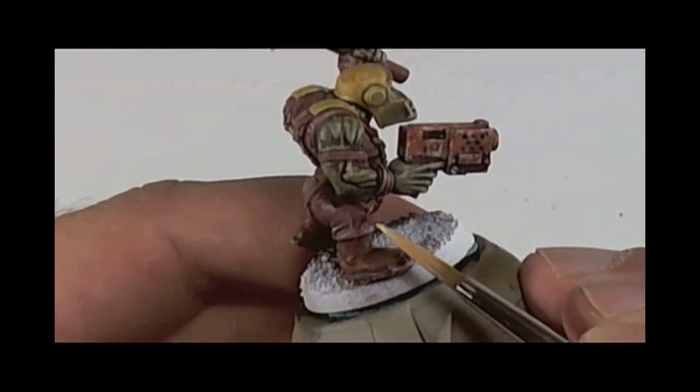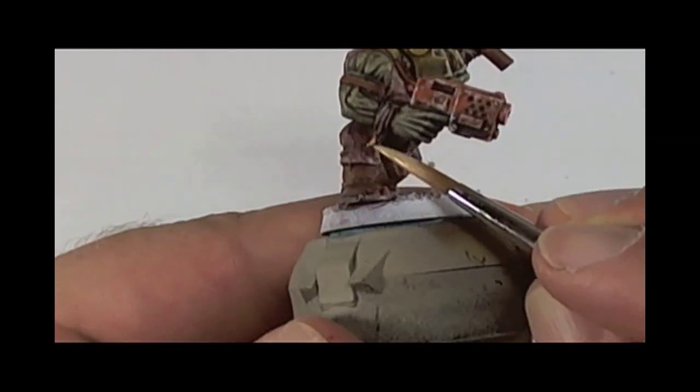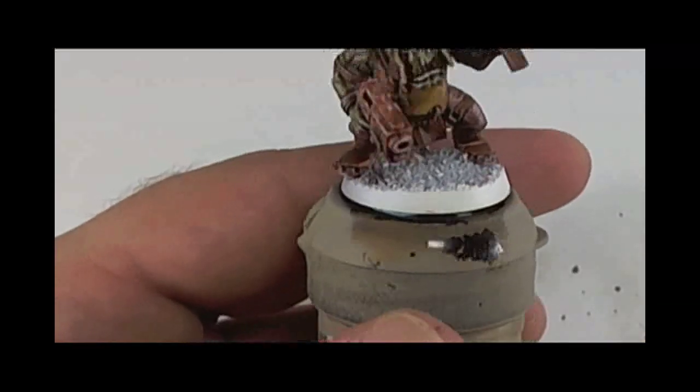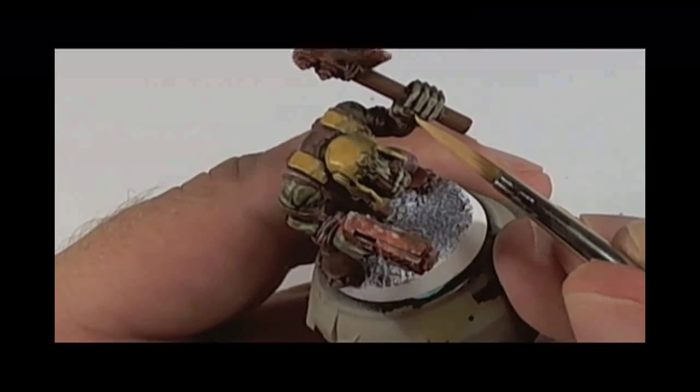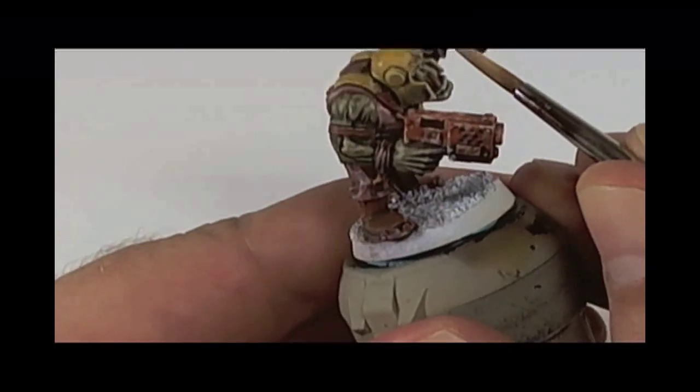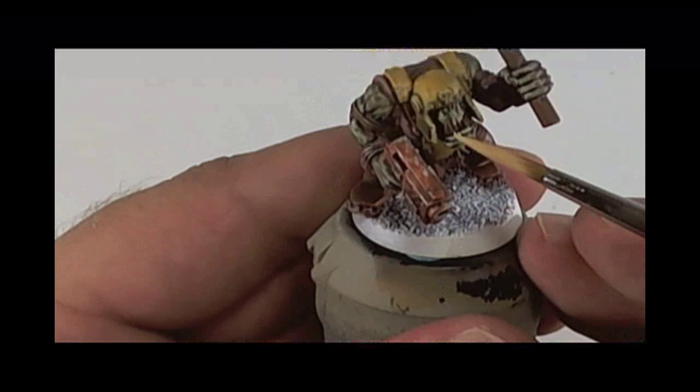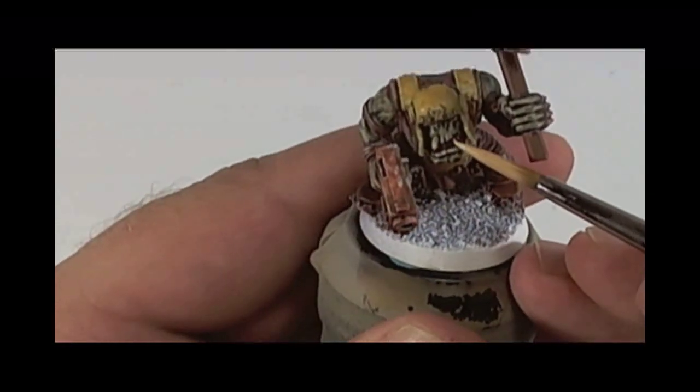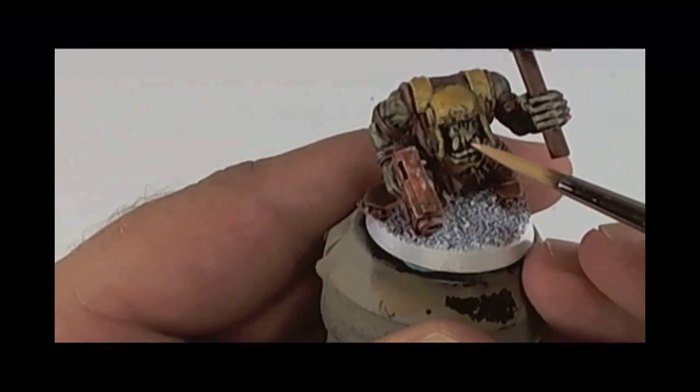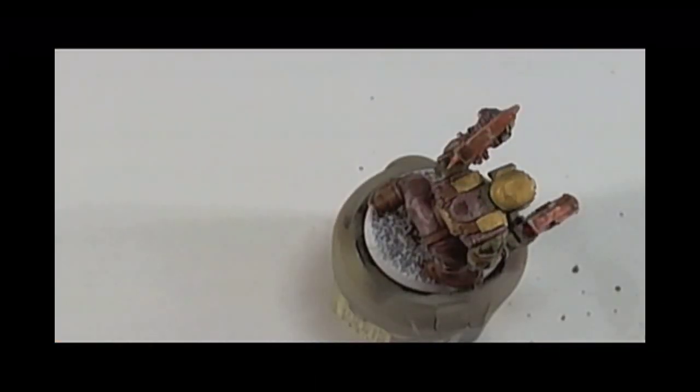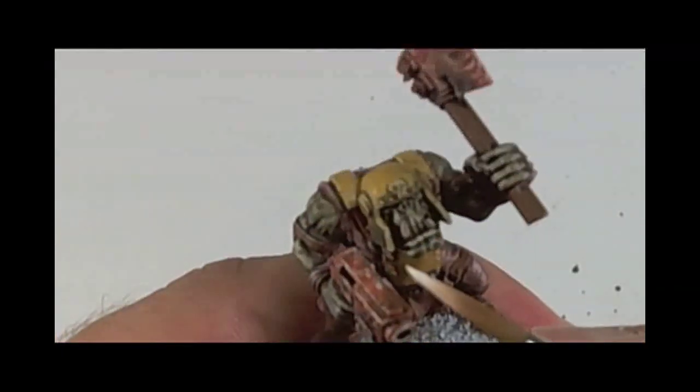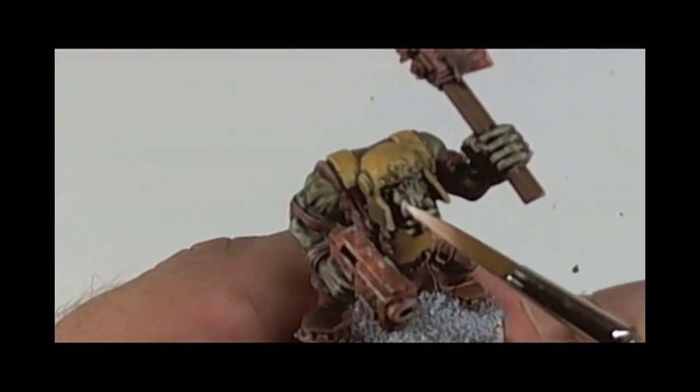Next, we'll be using Bleached Bone. Once the Bleached Bone dries, we do a final tiny highlight of white on the same areas we just did.